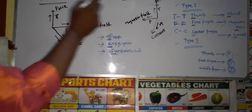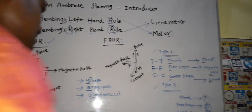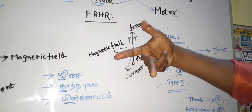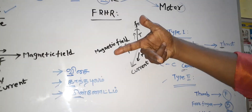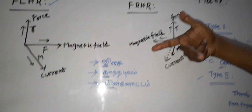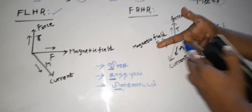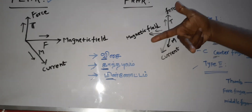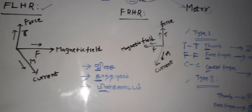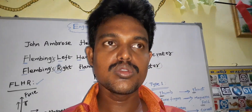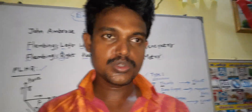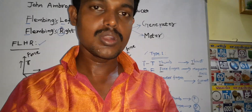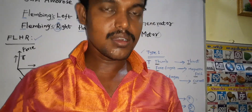So this is the shortcut for the Fleming's left-hand rule. The right-hand rule is the same — you can also apply T-T-F-F-C-C. This gives you force, magnetic field, and current for both rules. The Fleming's left-hand rule is the major rule. The same approach applies to the Fleming's left-hand rule.